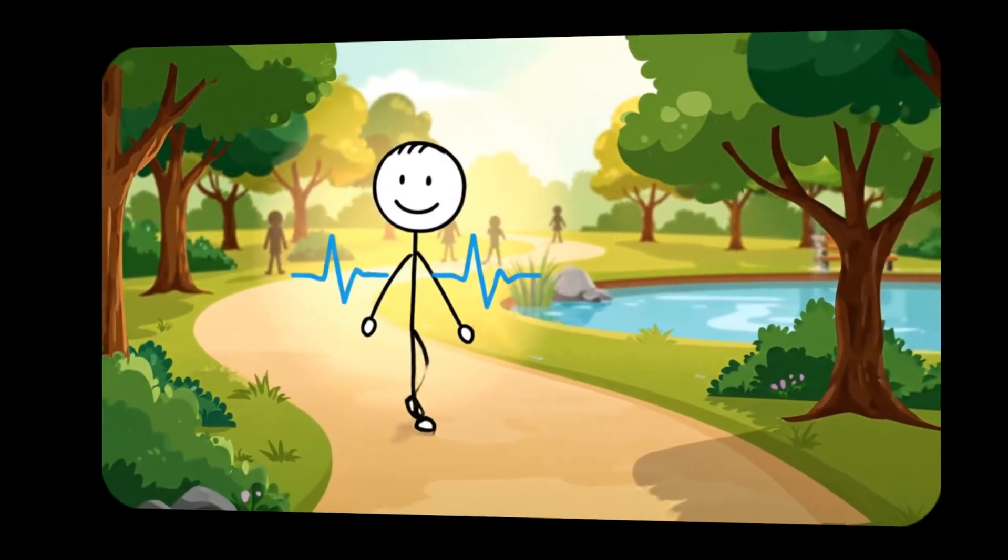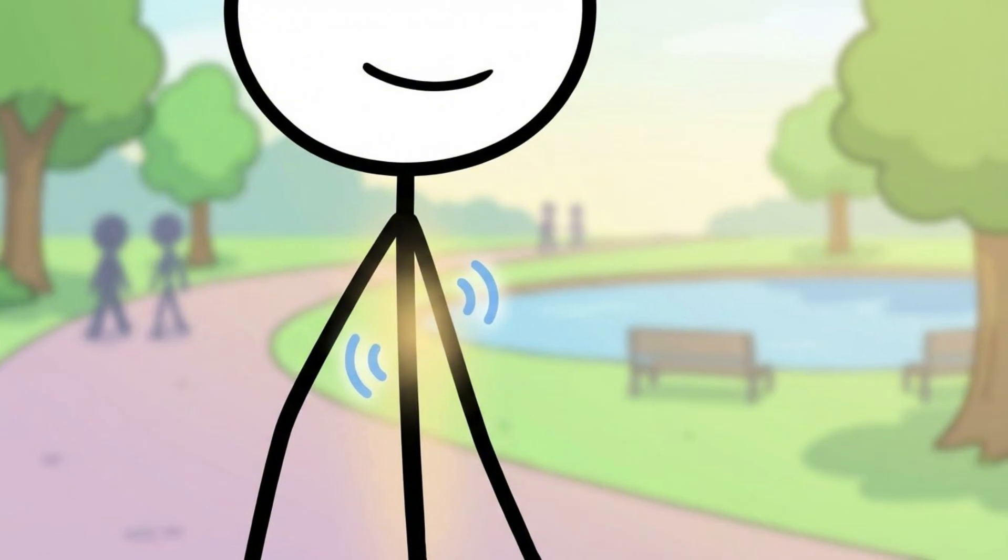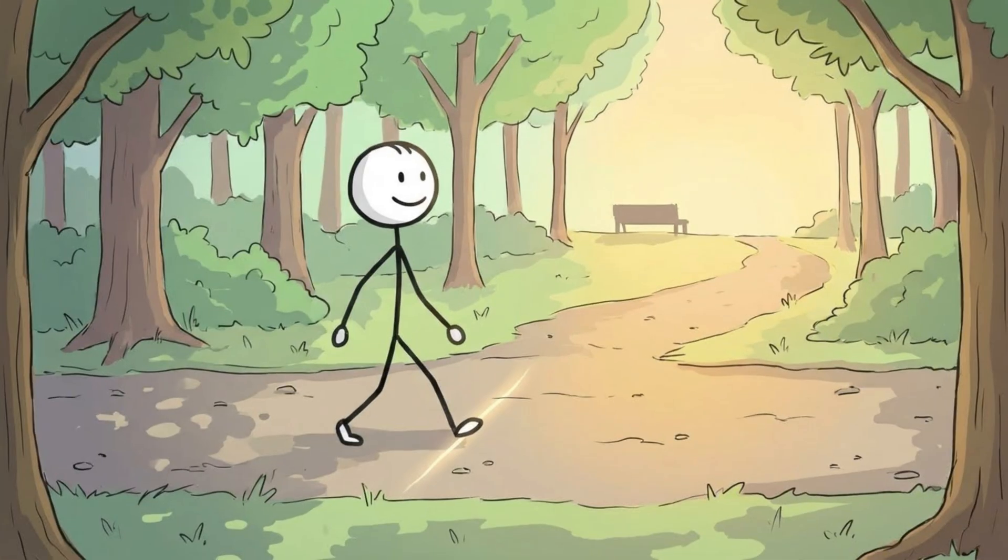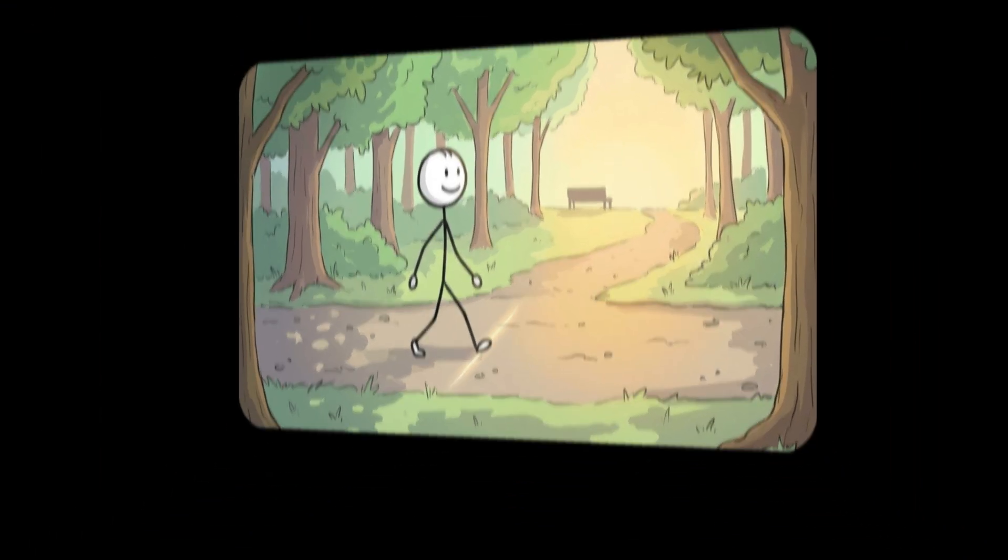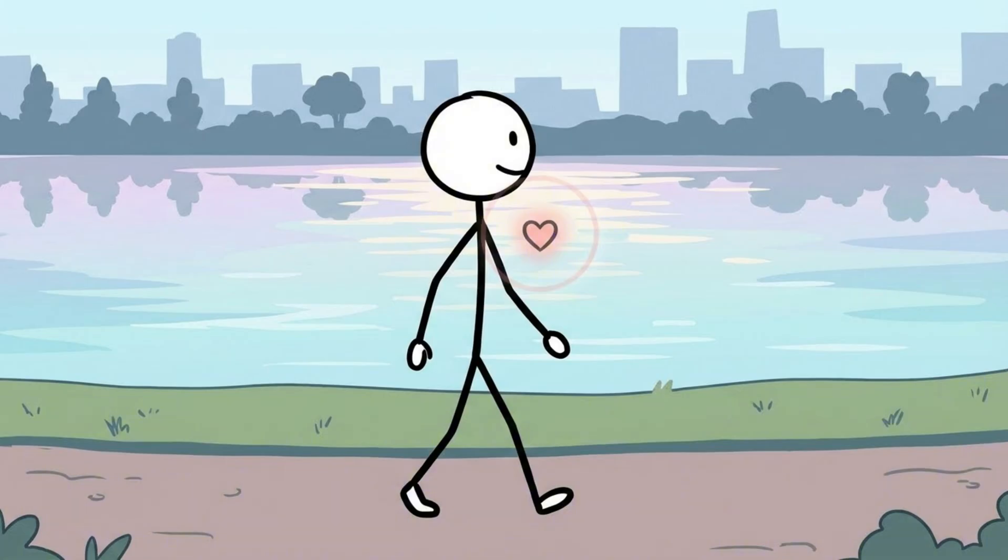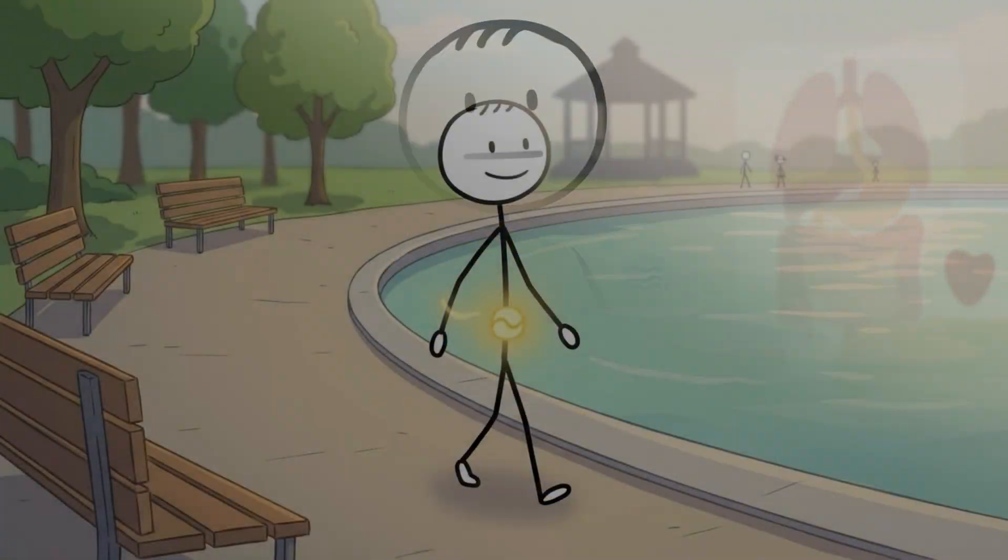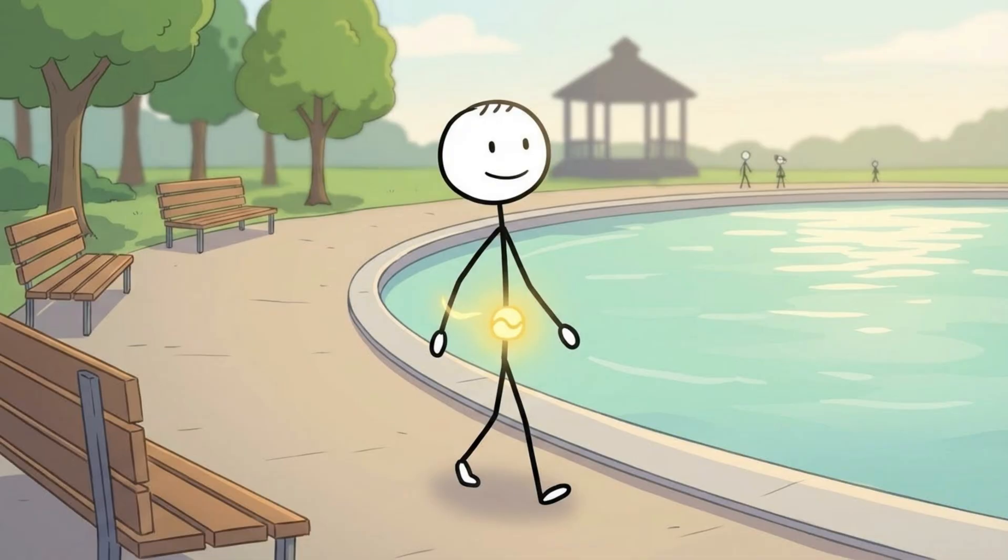This is why consistency matters more than intensity. When walking becomes a daily or near-daily habit, your nervous system stops treating it as a novel stressor. Heart rate stabilizes faster. Breathing finds rhythm earlier. Cortisol spikes become less pronounced. The body enters the fat-burning state with less negotiation. What once took 20 minutes might begin happening in 10. Many people underestimate this adaptation because it isn't dramatic. There's no sudden milestone or visible signal that announces it. But internally, the system becomes more cooperative.